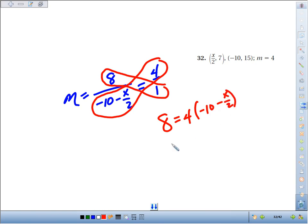If we distribute, 4 times negative 10 is negative 40, and 4 times negative x over 2. Ignore the negative x for a second. If you have 4 and you divide it by 2, you're going to end up with 2.